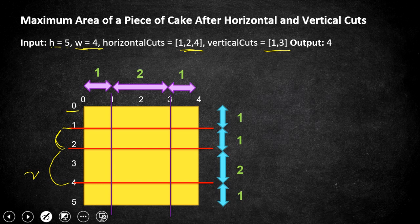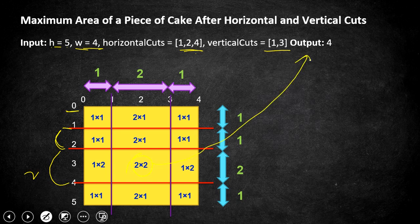Now we know the width and height of each row and column, so it is easy to calculate the area of each rectangle inside it as the product of width and height. The maximum area here is 2 × 2, and that is going to be our output.